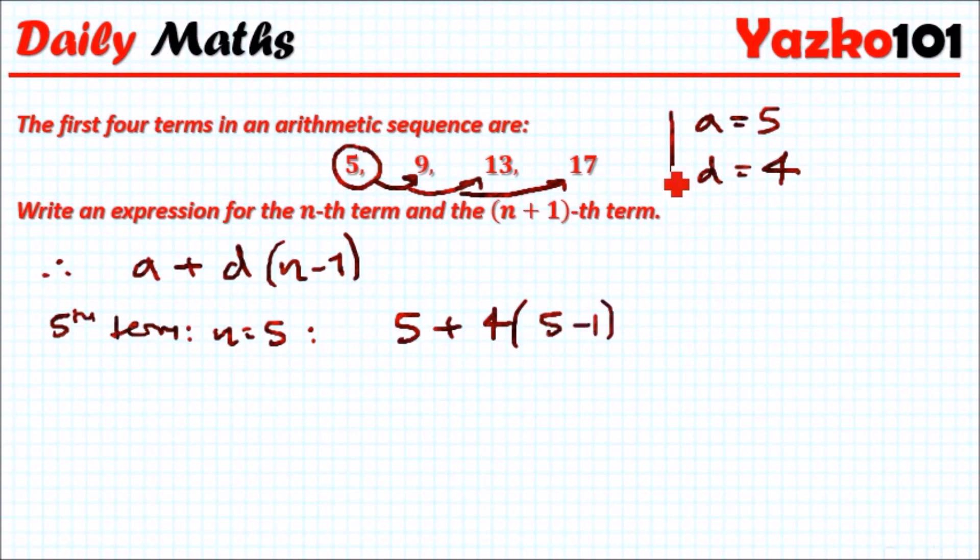So what's it going to give us? So the 5 minus 1 is 4. 4 times 4 is 16. 16 add 5 is 21. And is that 4 greater than 17? Yes, it is. So actually this formula works perfectly. We can use this to find any position.